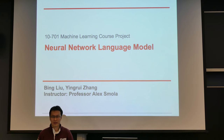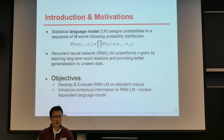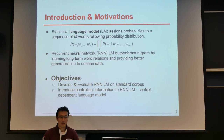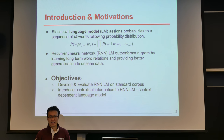My name is Bing and my teammate is Ying-Rui sitting there. A language model assigns probabilities to a sequence of words following probability distributions. The recent development of the neural network language model outperforms the classical n-gram models by learning long-term word relations and providing better generalizations to unseen data.